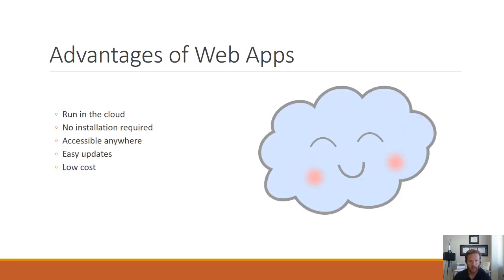Now let's move on to the advantages. There are several advantages to using a web app as opposed to a desktop application. One of them is that it runs in the cloud. While I talked about that as a disadvantage, an advantage is that it could be accessed anywhere. If you wanted to access your Microsoft Office documents from anywhere, even on a device that doesn't have Microsoft Office installed, you could just go to Office Online and access those applications.